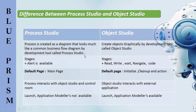In Process Studio, a process has main page as its default page. Whereas a Business Object has three default pages: initialize, cleanup, and action. In Process Studio, the process interacts with Object Studio via the Control Room, whereas Object Studio interacts with external applications.